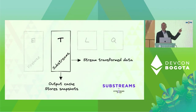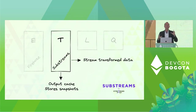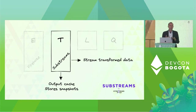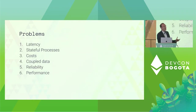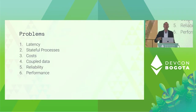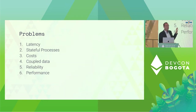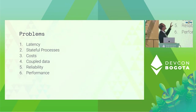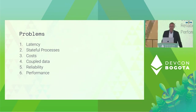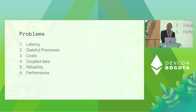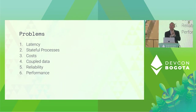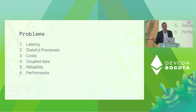Let me give you first a primer on Firehose, because there are a lot of benefits of Substreams that come directly from the Firehose. At StreamingFast, for many years we've been thinking hard about all these indexing problems from first principles. We needed a robust extraction layer. We wanted something that was extremely low latency — something that would push data out the moment the transaction was executed within a blockchain node. JSON-RPC was not going to cut it.